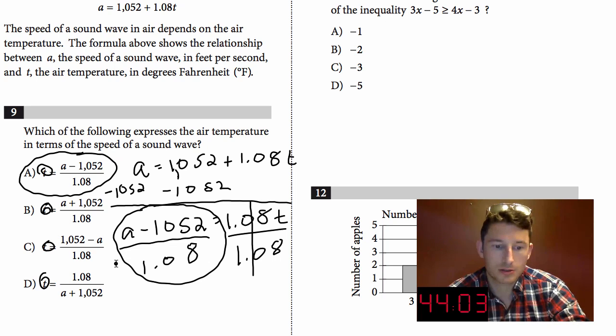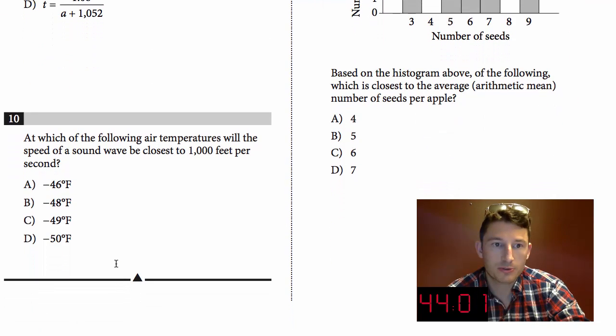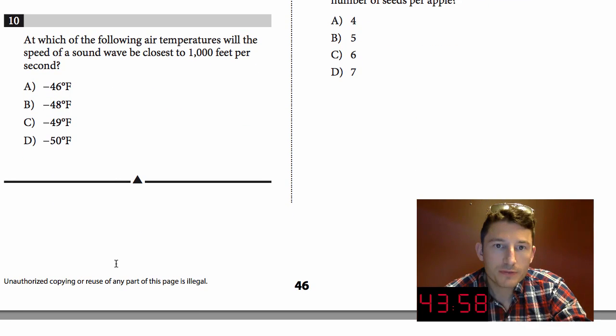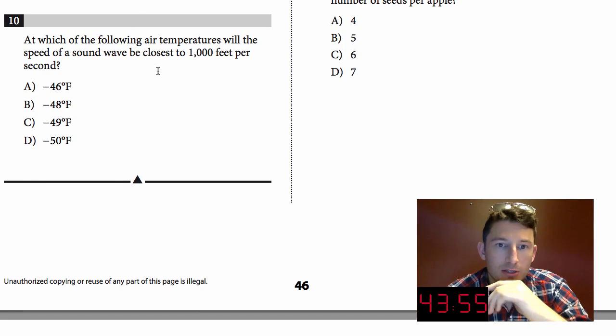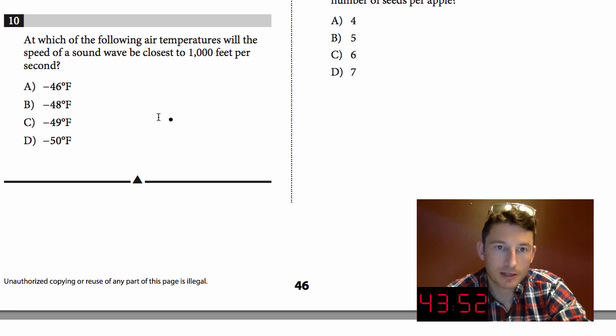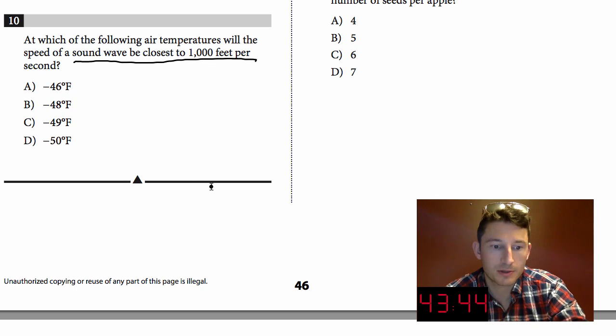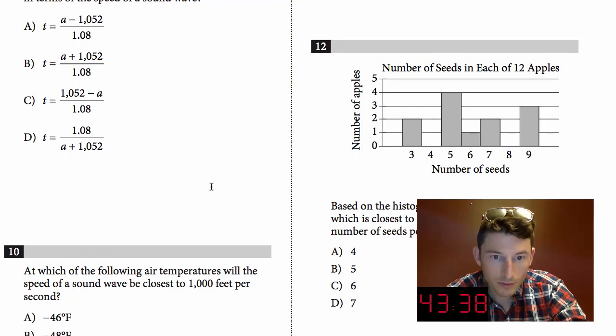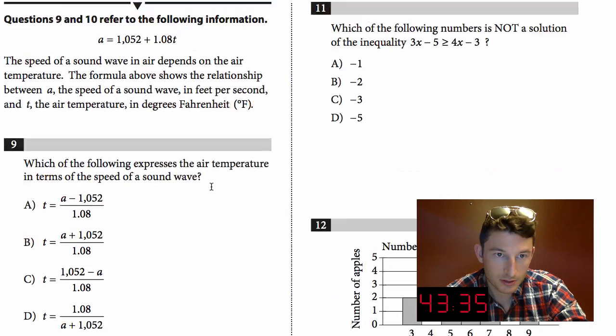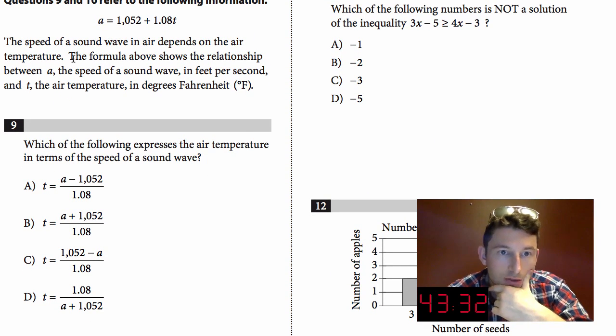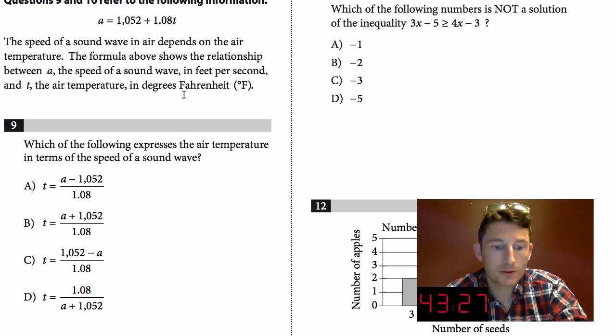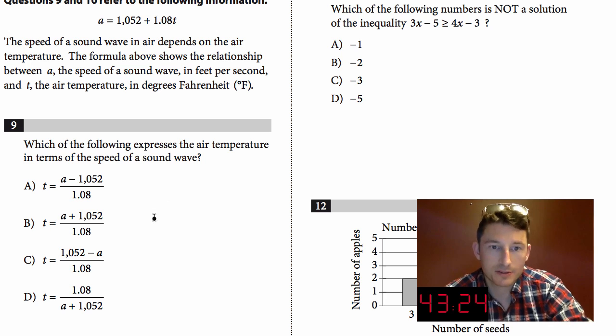Number ten: At which of the following air temperatures will the speed of sound be closest to a thousand feet per second? I like to underline what we're looking for: a thousand feet per second. Which one is that, is that the a or the t? I gotta go back here because of the way I closed the screen off. They want the speed to be a thousand. Let's look: the formula above shows the relationship between a, the speed of sound. All right, well that means that they want a to be a thousand.